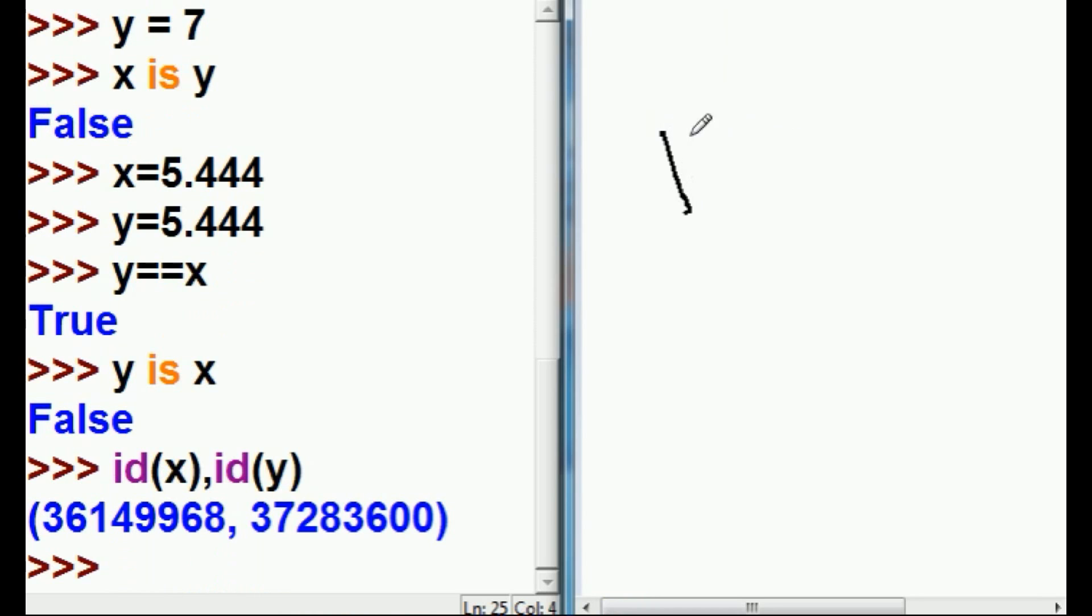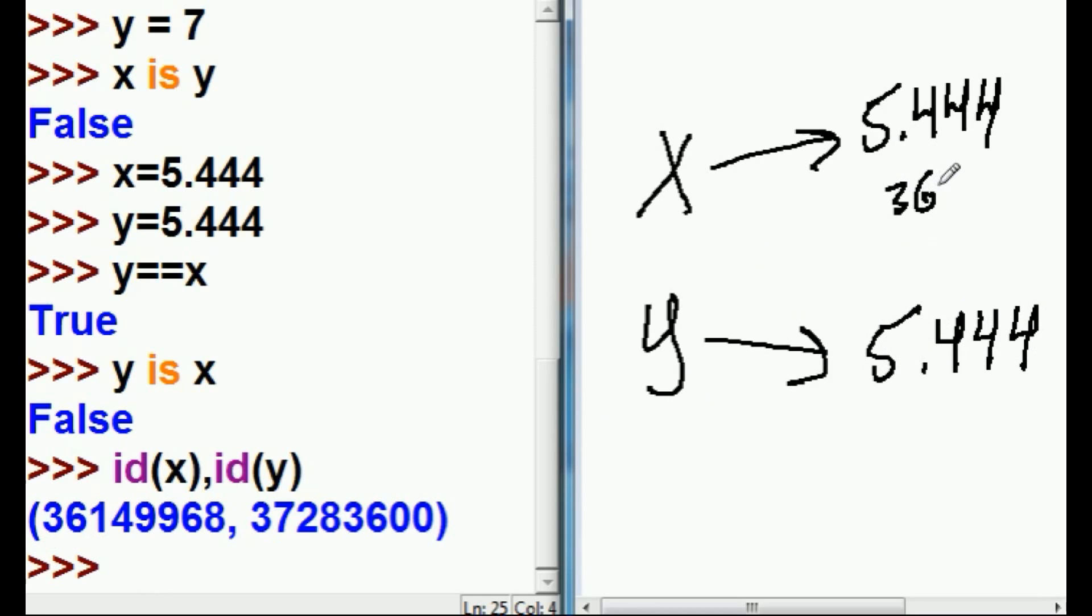Wow. So, x is referencing this 5.444, while y is referencing this 5.444. And they're in separate areas of memory. This is in area 36149968, this is in 37283600. Wow.